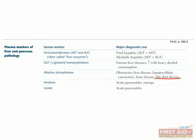Amylase and lipase are both markers for acute pancreatitis, and amylase is also elevated in mumps. The amylase in the latter is the one secreted usually by the salivary glands, as opposed to pancreatic amylase. Lastly, ceruloplasmin levels are decreased in Wilson's disease. We'll talk about each of these conditions in more detail and review these lab tests.